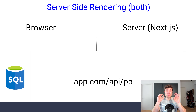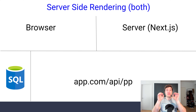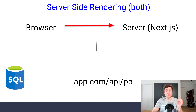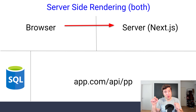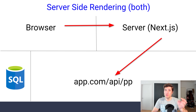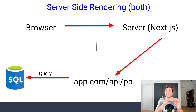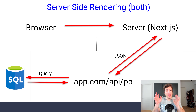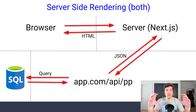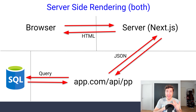Server-side rendering will be exactly the same for GetInitialProps and GetServerSideProps in the example shown. Imagine you go to www.myapplication.com — your browser makes a request to your server. Your server immediately runs a fetch call to API/people, which goes to a SQL database doing SELECT * FROM a table. When that query is done, JSON is returned to the server, and then the server does server-side rendering and returns HTML to the browser.